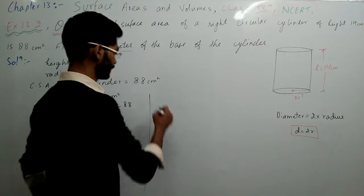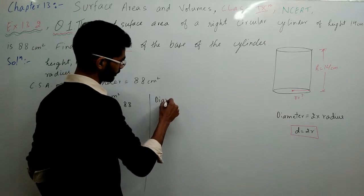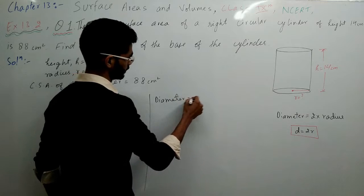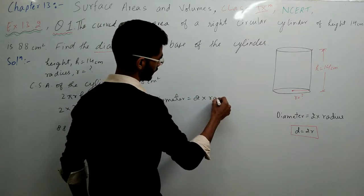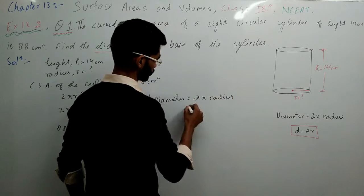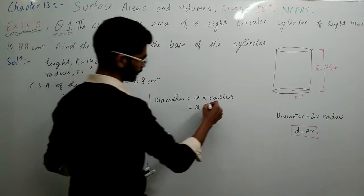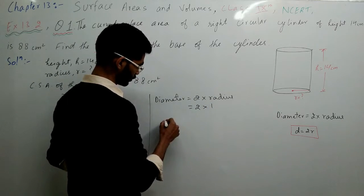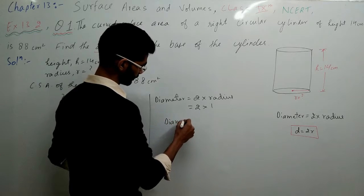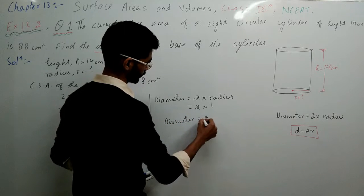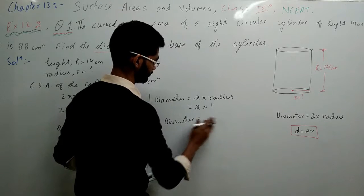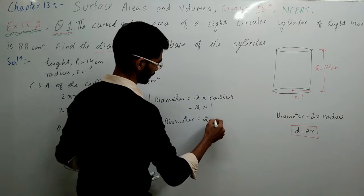So now we can see how much is diameter. Diameter what is happening? 2 into radius. So 2 into radius and radius how much is it? 1 centimeter. So 1 multiplied. So our diameter how much is it? 2, 2 centimeter.